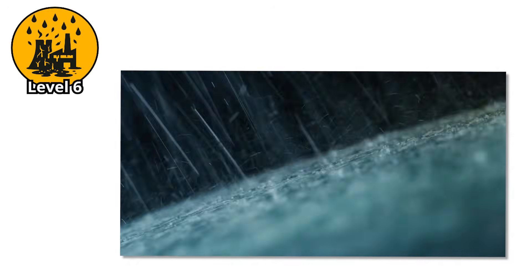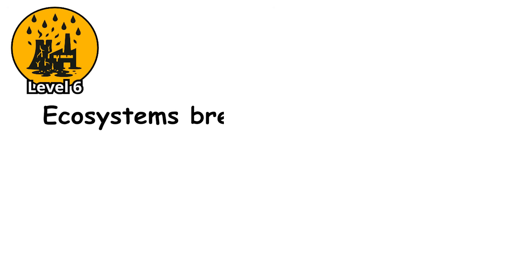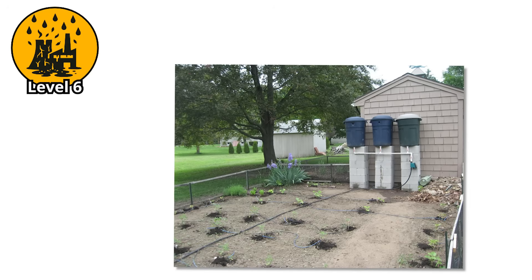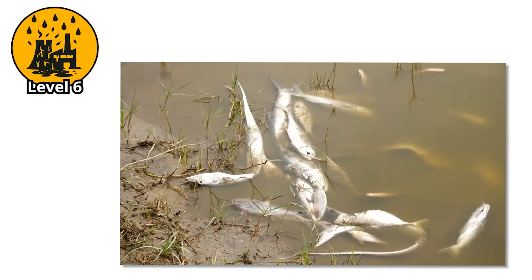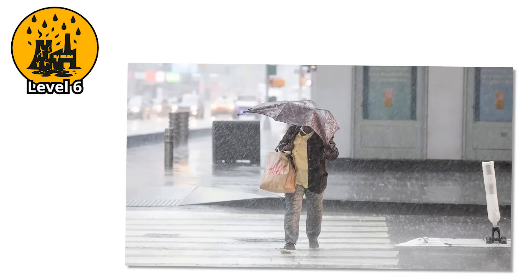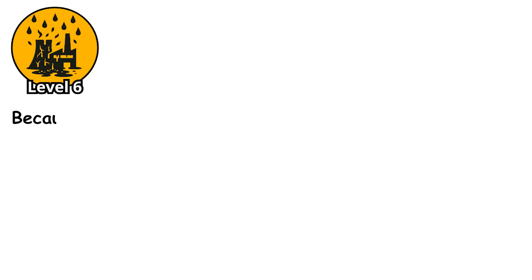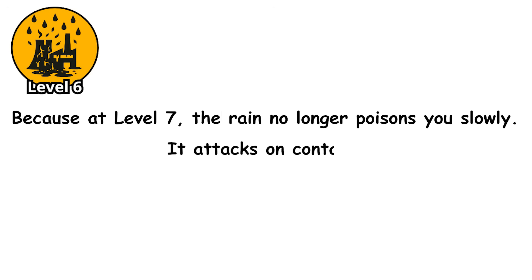Level 6 is not a splash of acid. It is a drip-feed apocalypse delivered over generations. Ecosystems break, agriculture fails, cities crumble. The damage is not always visible right away, but it is constant, unforgiving, and irreversible without intervention on a massive scale. And for the people living under skies like this, it is already too late. Because at Level 7, the rain no longer poisons you slowly — it attacks on contact.